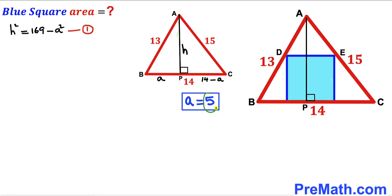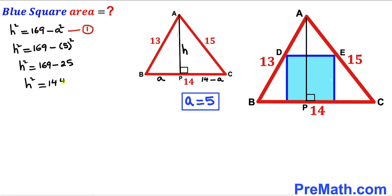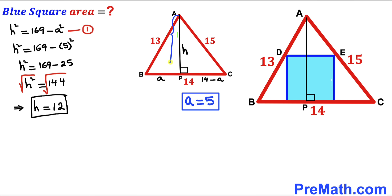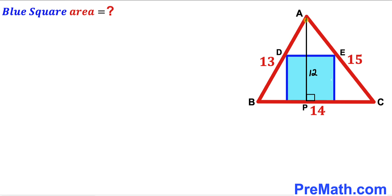Since lowercase a = 5, we substitute into equation 1: H² = 169 − 5² = 169 − 25 = 144. Taking the square root of both sides gives H = 12. So the perpendicular AP length in triangle ABC turns out to be 12 units.